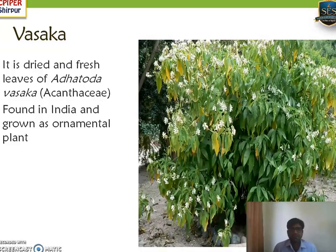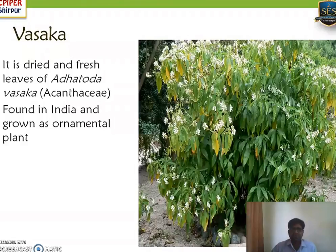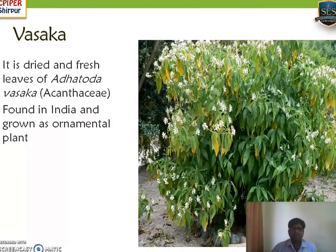Vasaka is a medicinal plant. Being a pharmacy student, we know it is very commonly known as Adusa, and some marketed preparations are also available as an Adusa syrup. It is found in India and nearby countries and grown as an ornamental plant because it gives white flowers, and it is mainly planted in gardens as well as backyards of houses. Medicinally, the dried as well as fresh leaves of Adathoda vasaka belong to family Acanthaceae.